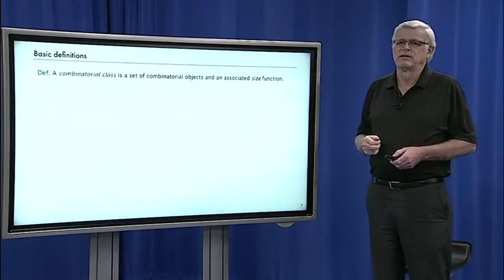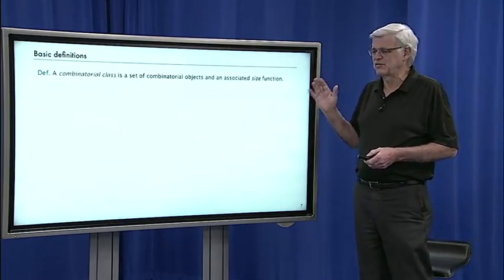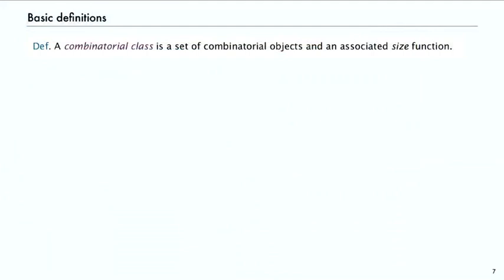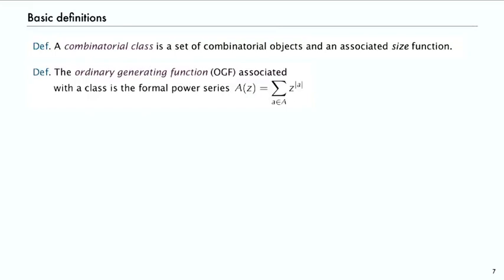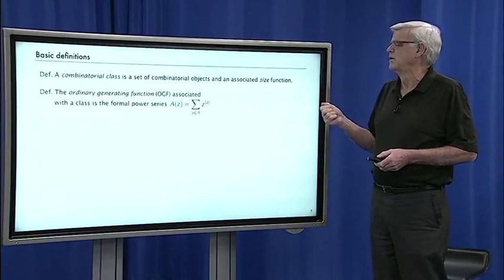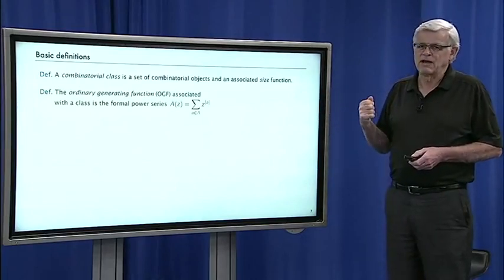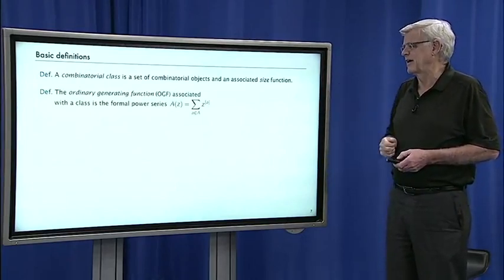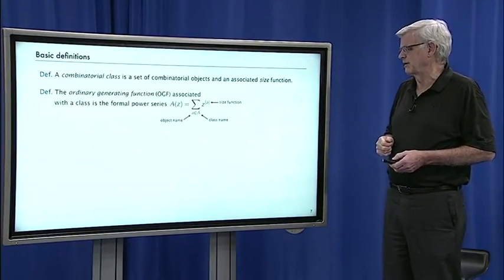Basic definitions. A combinatorial class is a set of combinatorial objects with an associated size function. That's our starting point, the object of study. Today what we're going to talk about as a primary object of study is the ordinary generating function associated with the class. That's a formal power series where you have a variable z and you sum for all objects in the class z to the size of that object. That's the ordinary generating function.